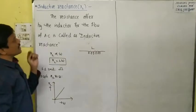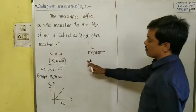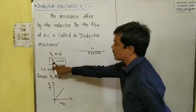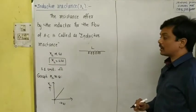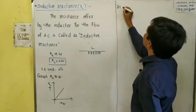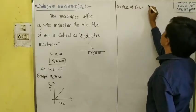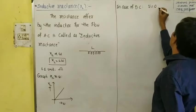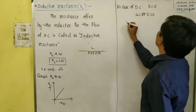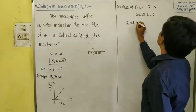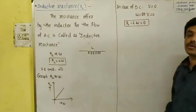This inductor offers high resistance for the flow of AC, because AC has some frequency and therefore some resistance. In the case of DC, the inductor does not have any resistance. DC does not oscillate, its frequency is zero, and therefore angular frequency is also zero. That's why inductive reactance is also zero — it is not there for DC, it is only for AC.